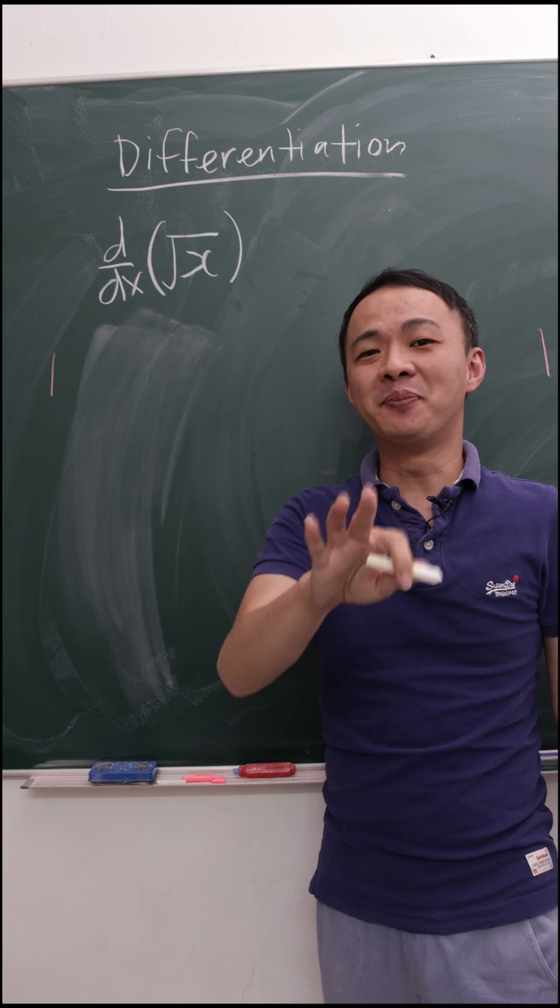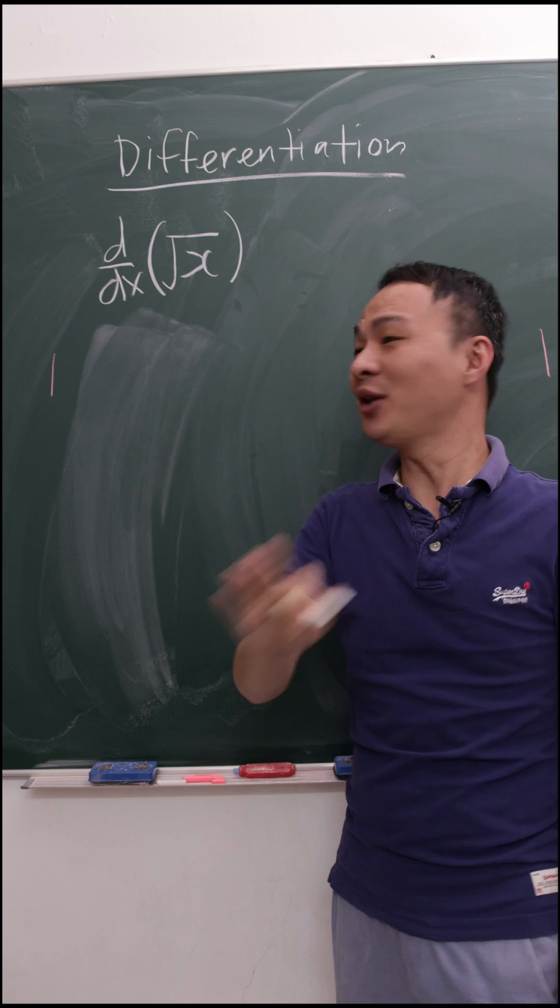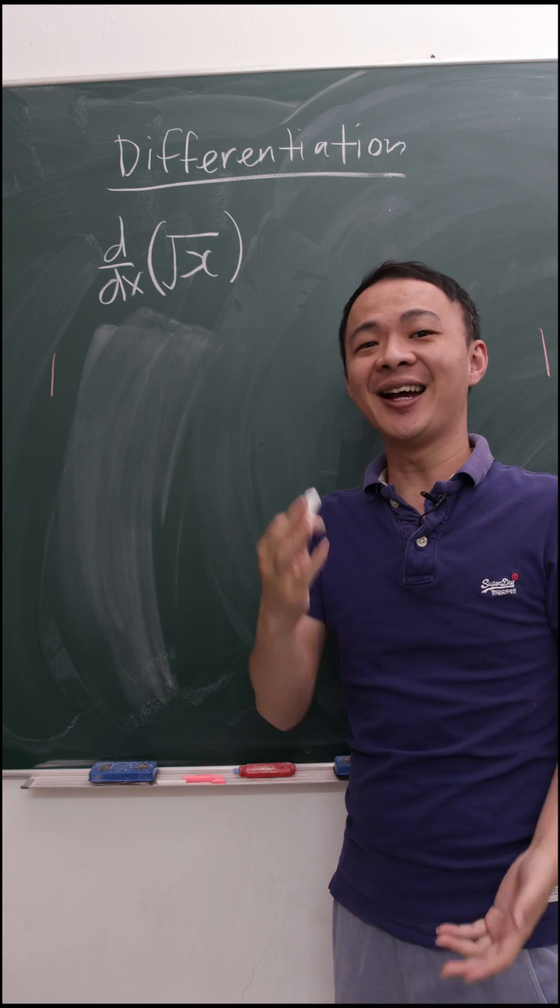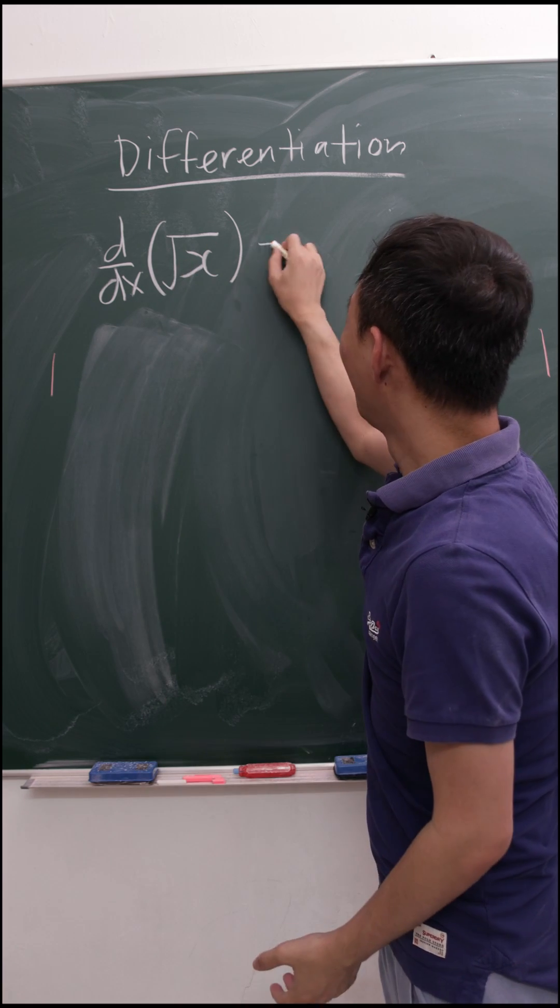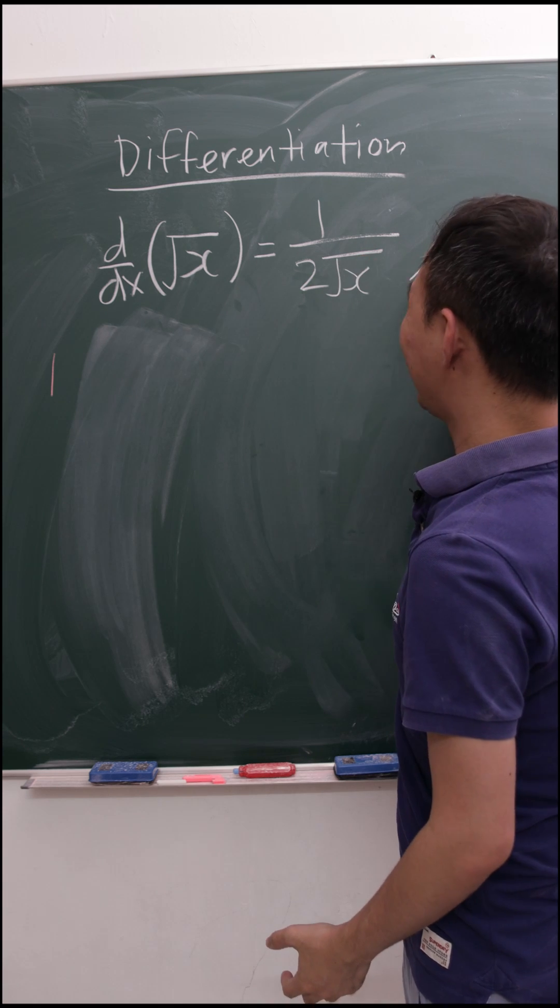Alright, in this video I'm going to teach you how to impress your friends by doing differentiation. Let's say today I want you to differentiate the square root x. I can straight away write out the answer which is 1 over 2 square root x. So this is the answer.